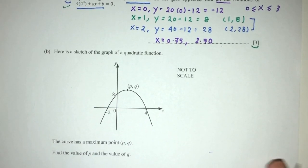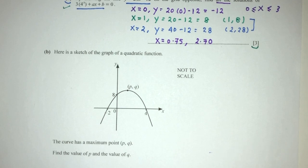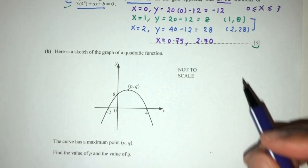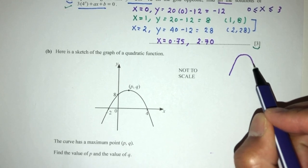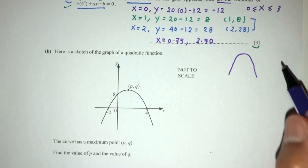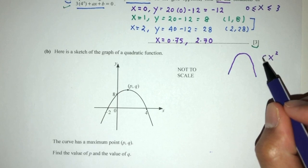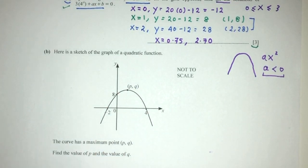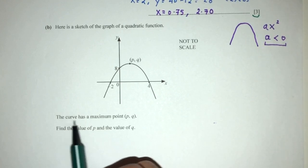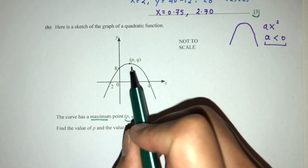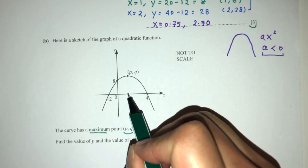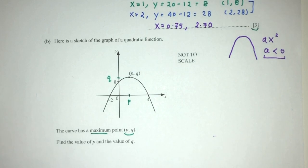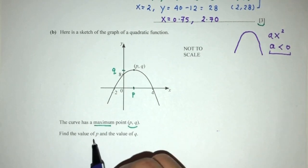For part b, here is a sketch of a graph of a quadratic function. We don't know the equation yet, but we can see the shape of the graph. When the shape is like this, it is a maximum curve, which means the coefficient of x² must be negative. The curve has a maximum point P, Q — P is the x value and Q is the y value. We have to use that information to find the values of P and Q.